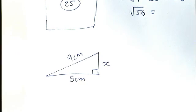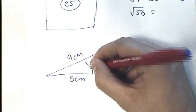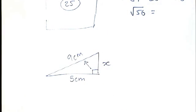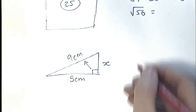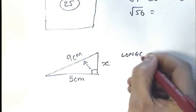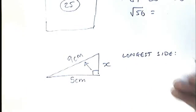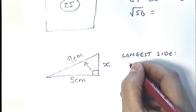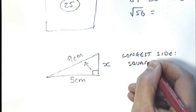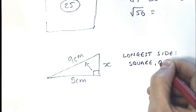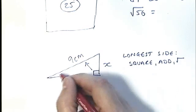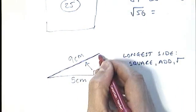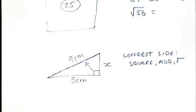There's a shortcut rule: if you're finding the longest side — that's the hypotenuse — then you're going to square the two numbers you see and add them, then take the square root. The hypotenuse is always opposite the right angle.